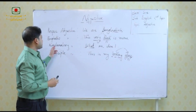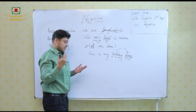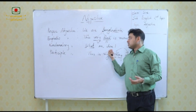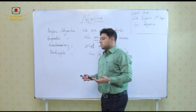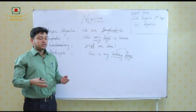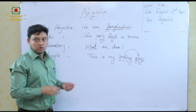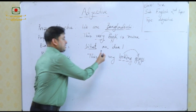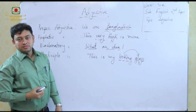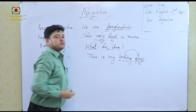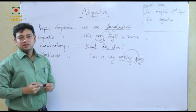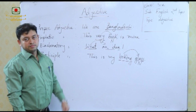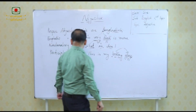Another example is exclamatory adjective. When there is an exclamation mark, there is an expression of extreme feeling — joy or sorrow. For example: What an idea! The word 'what' qualifies the noun phrase 'an idea'. Because there is a sign of exclamation, the name becomes exclamatory adjective.